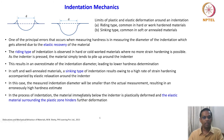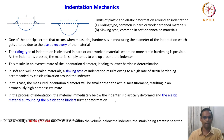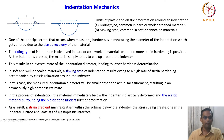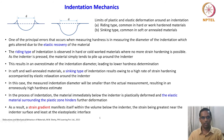What this illustrates is that irrespective of any hardness testing method, the impression created must be made perfectly. Otherwise it will have positive and negative influence on results. The geometry of the impression is crucial in taking results of any type of hardness test. In the process of indentation, the material immediately below the indenter is plastically deformed and the elastic material surrounding the plastic zone hinders further deformation. As a result, a strain gradient manifests itself within the volume below the indenter — the strain being greatest near the indenter surface and least at the elasto-plastic interface.